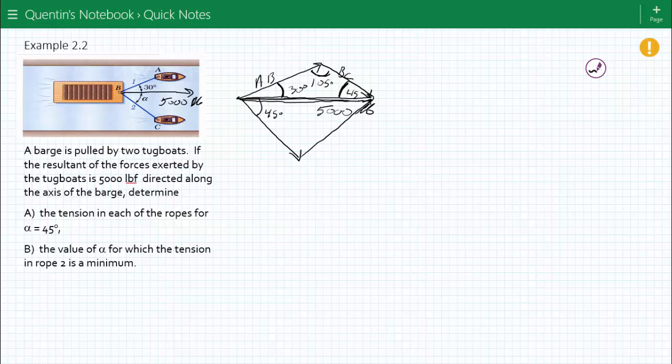And let's look at the law of sines. Sine of 105 over 5,000 is equal to sine of 30 over the opposite of 30, which is BC. So you can figure out, therefore, BC is equal to, they call that tension 2.